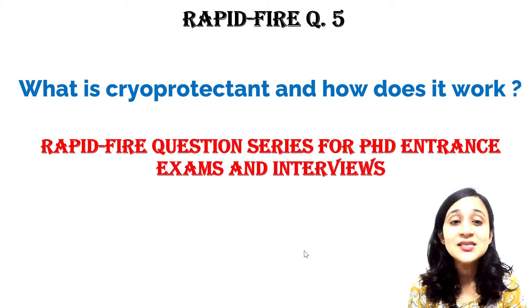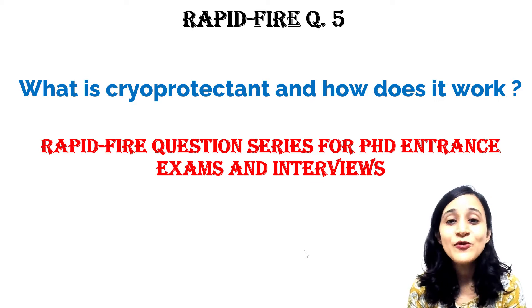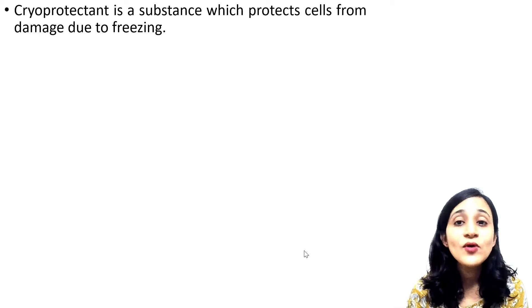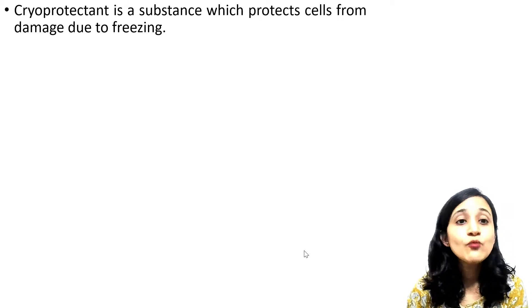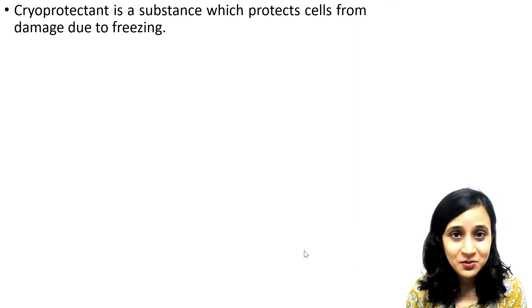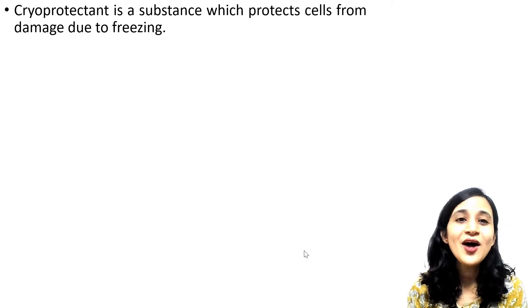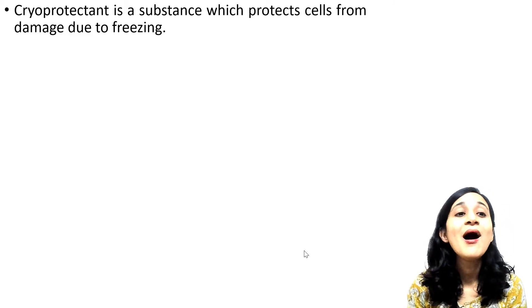So today's question is: what is cryoprotectant and how does it work? Cryoprotectant is a substance which protects cells from damage due to freezing. We freeze cells for protection purposes, and cryoprotectant is the substance we use for this protection — otherwise freezing does some harm to the cells.